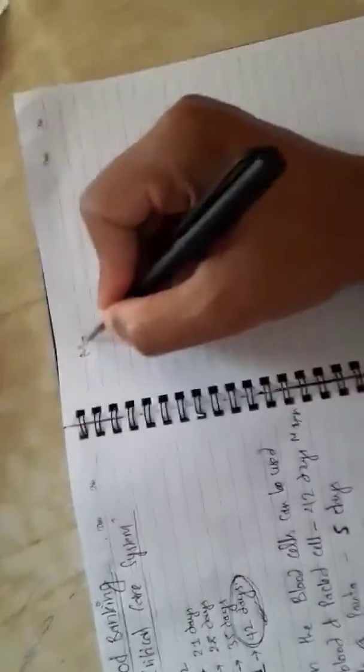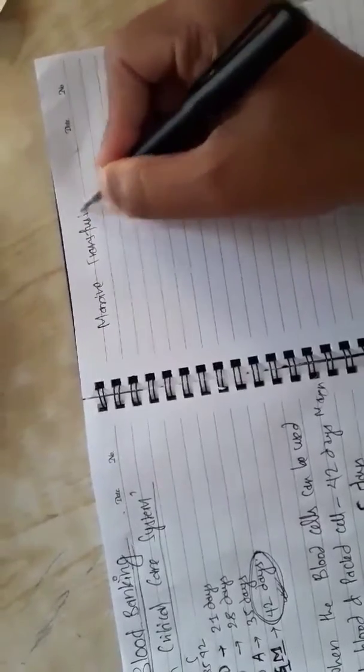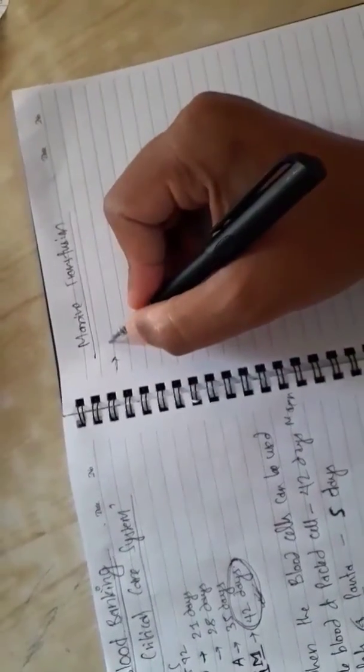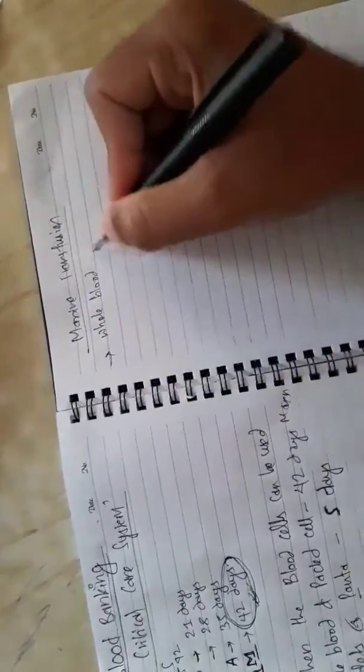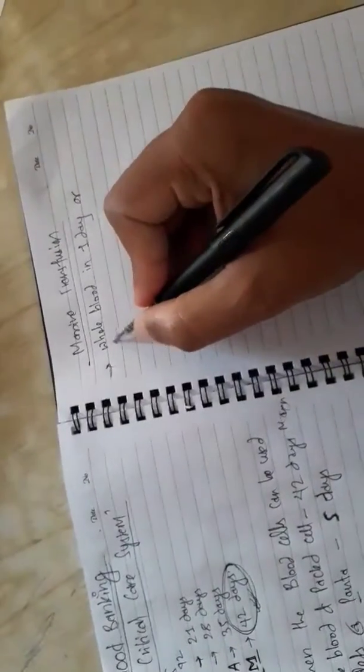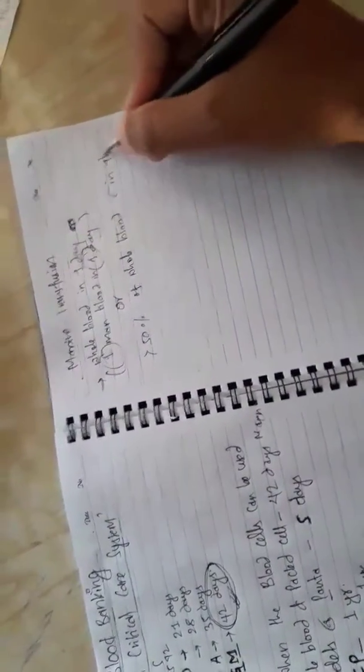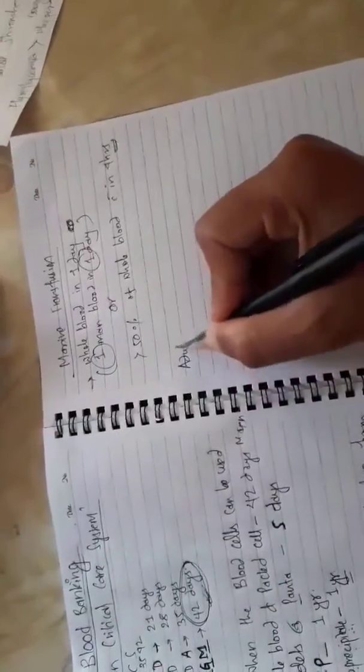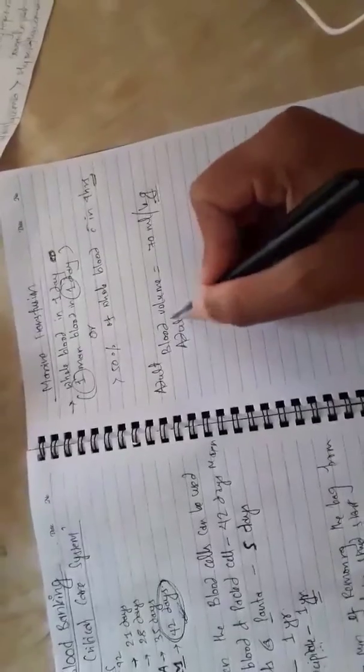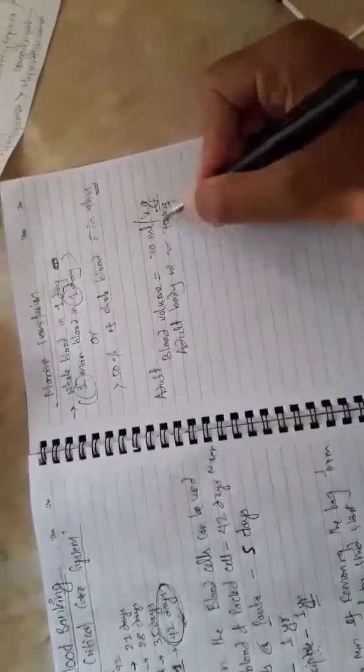There is one topic called massive transfusion. The definition of massive transfusion is one whole blood volume in one day - it's easy to remember by one man blood in one day - or more than 50% of whole blood within 4 hours. In adult, blood volume is equal to 70 ml per kg. Since the adult body weight is also around 70 kg, so it is very easy to remember.